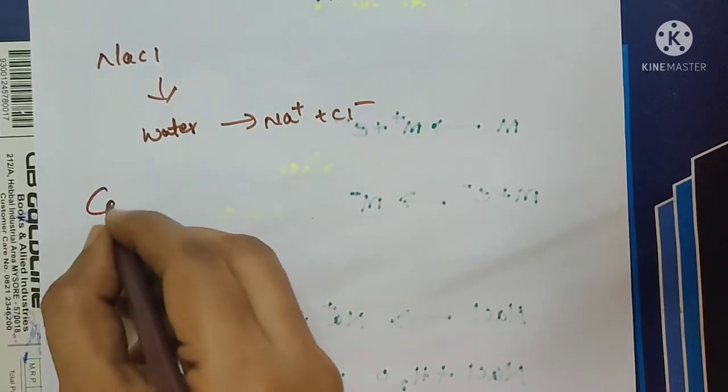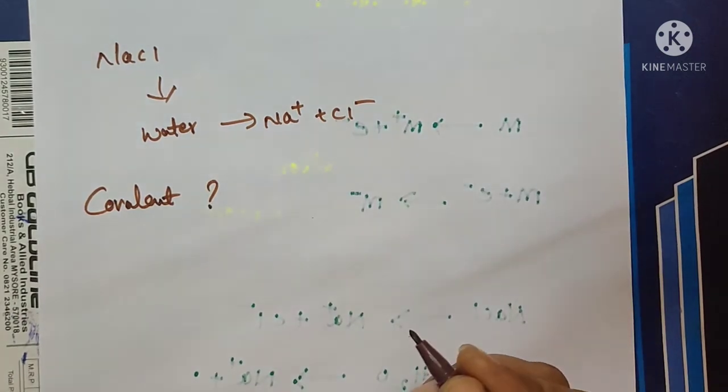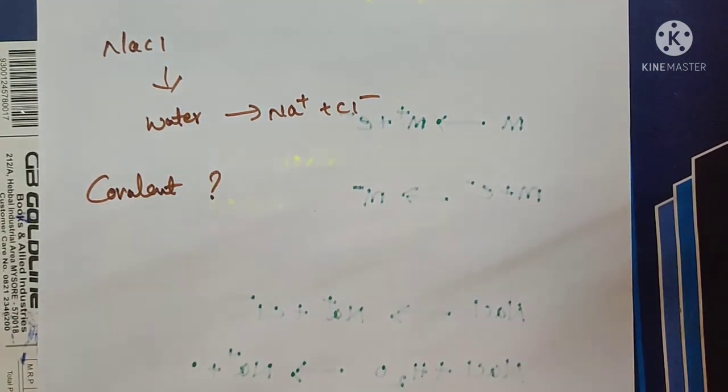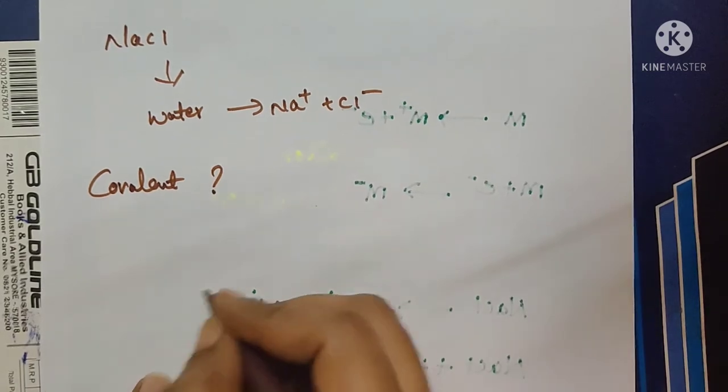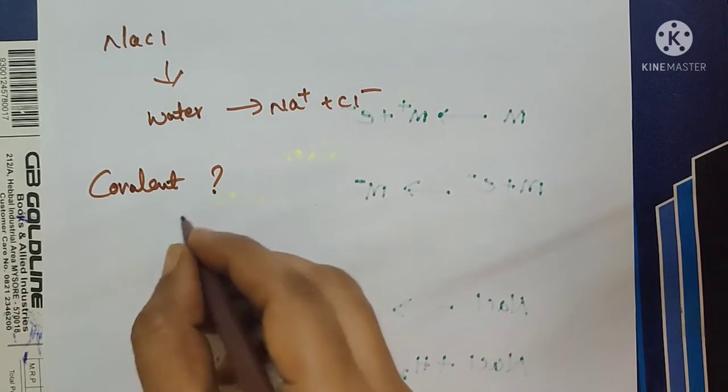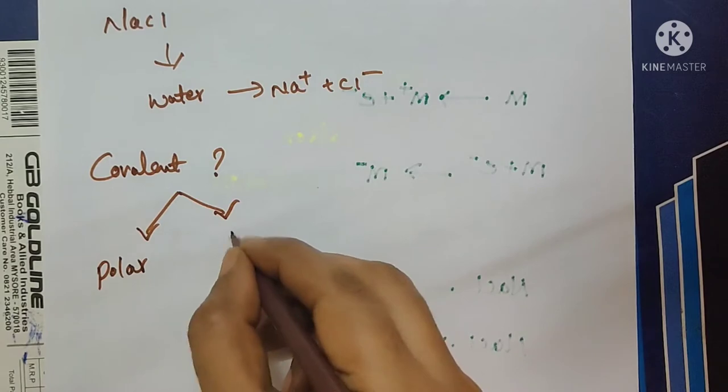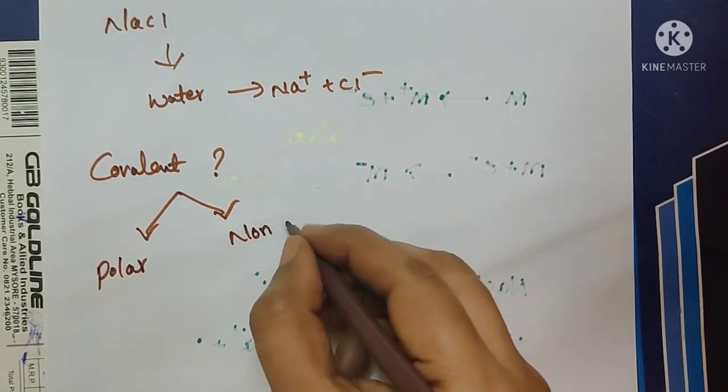Then, what about covalent compounds? Does covalent compounds undergo ionization? Yes and no. See, the covalent compounds are two types: one is polar covalent compounds and non-polar covalent compounds.